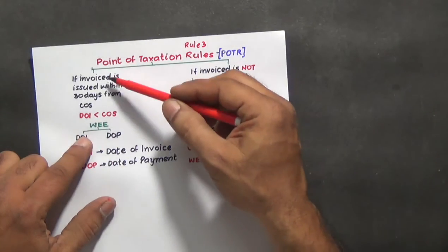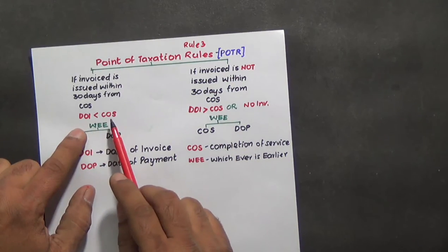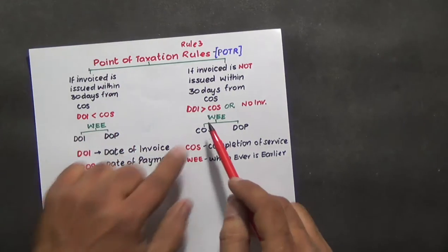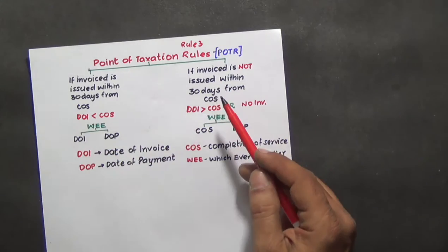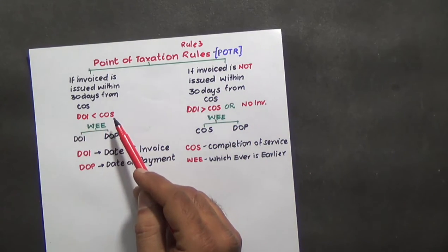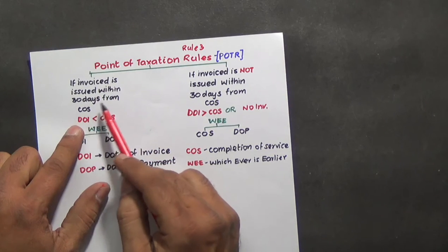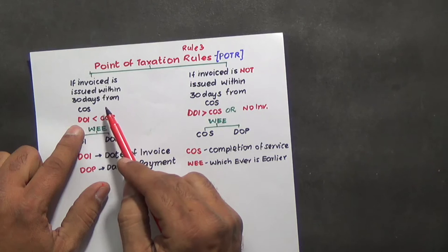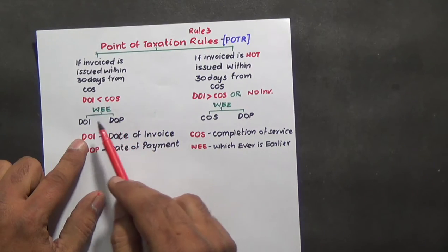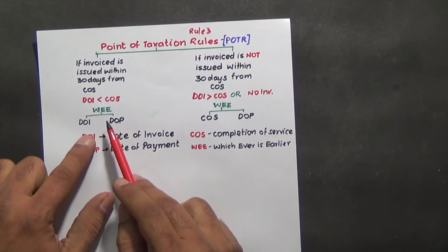Instead of lengthy words, abbreviations are easier to recall. If the invoice is issued within 30 days from the date of completion of service, then the point of taxation is whichever is earlier — date of invoice or date of payment, whichever happens earlier is the point of taxation.